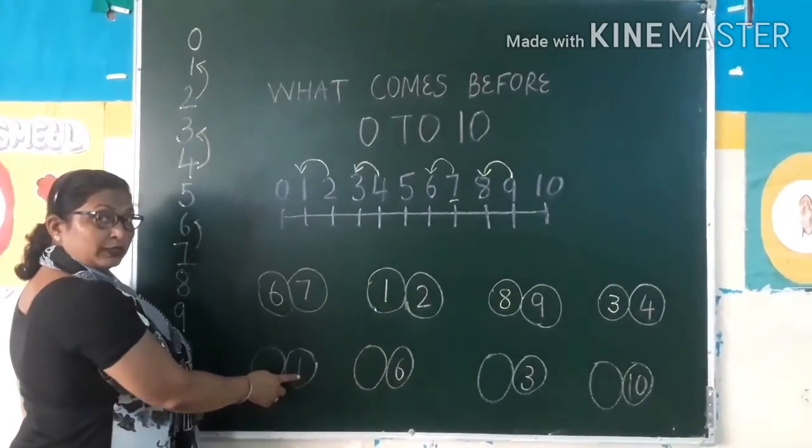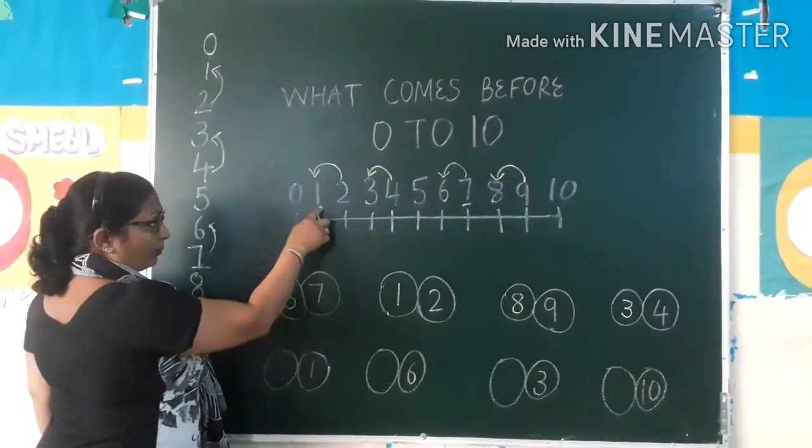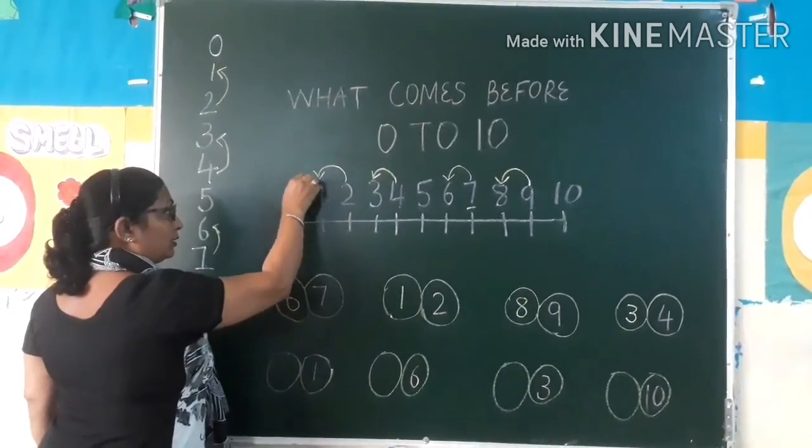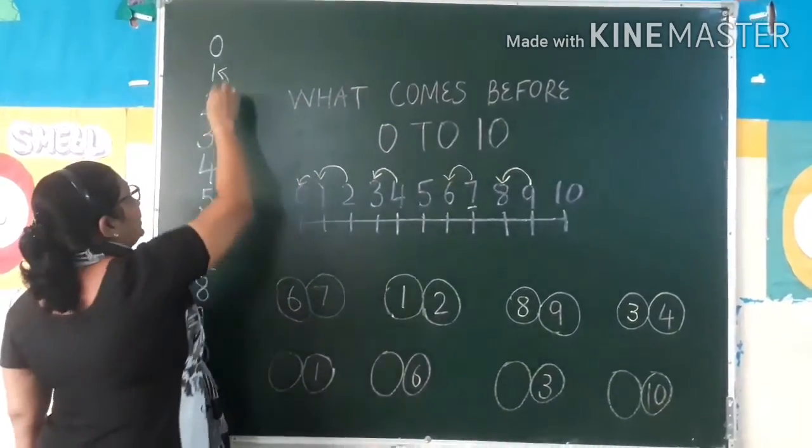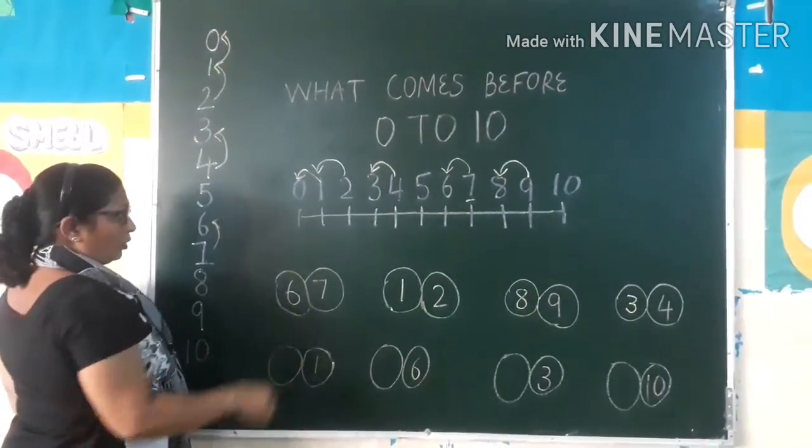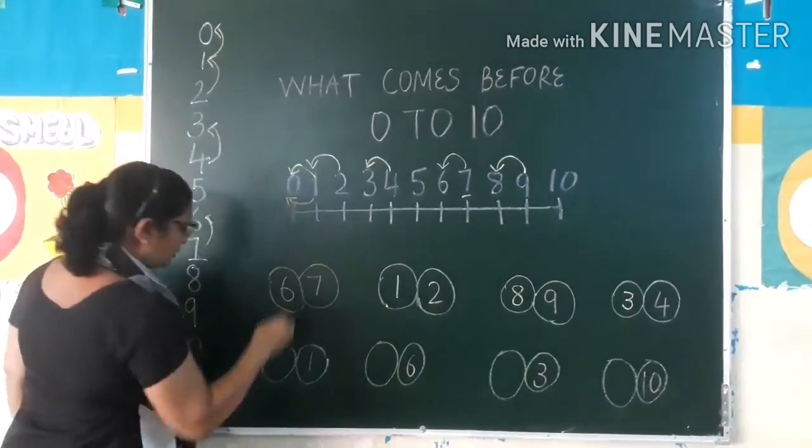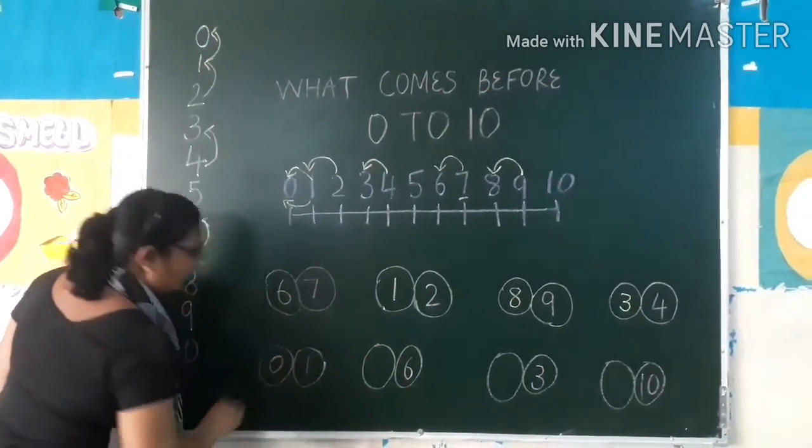To abhi what is this number? This is one. Yahan bhi yahan hai. To one se pehle kya number hai hamara? Zero. What is before one? That is zero. Yahan se dekho aise karthe. One se pehle kya aayega? Zero. To humne zero dekh lena hai.